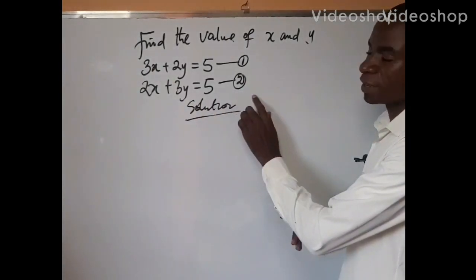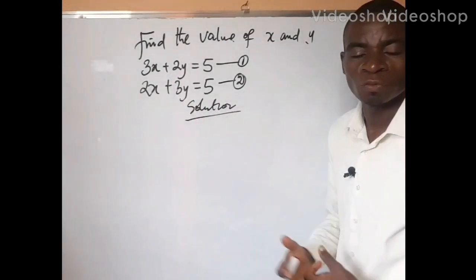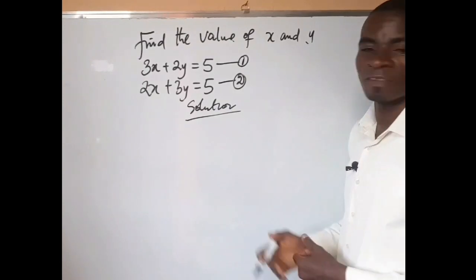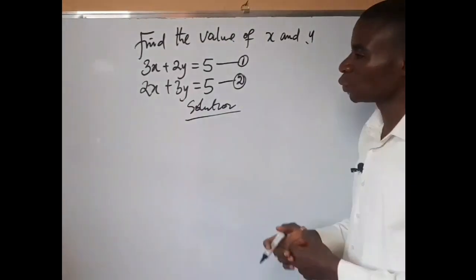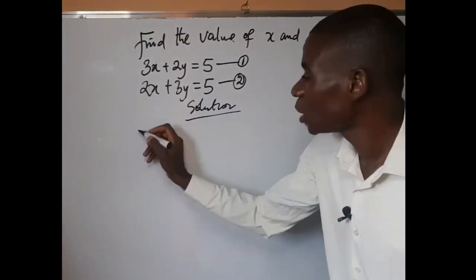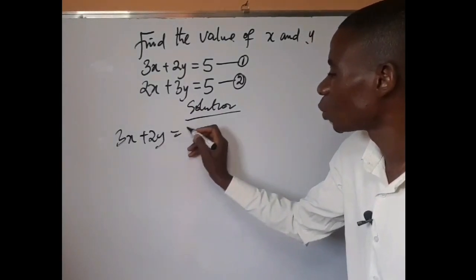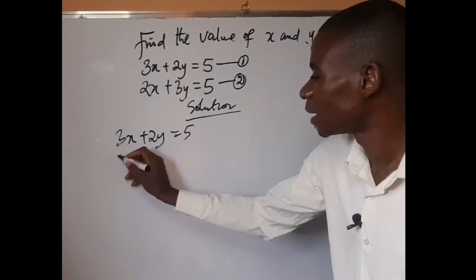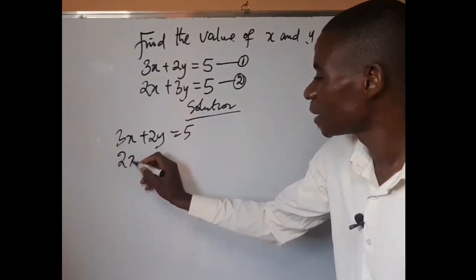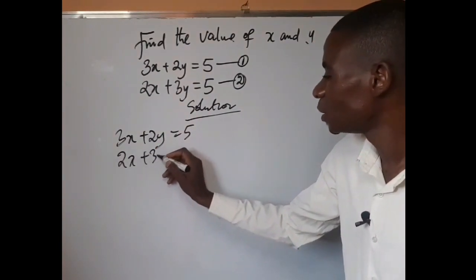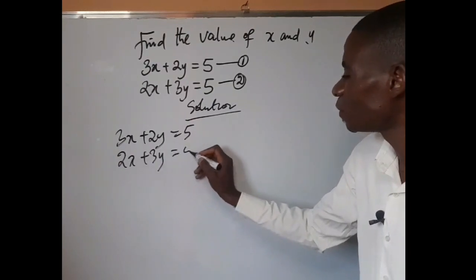Given two equations like this, we want to use the elimination method in solving this simultaneous equation. We first write the equations: 3x plus 2y equals 5, and 2x plus 3y equals 5.